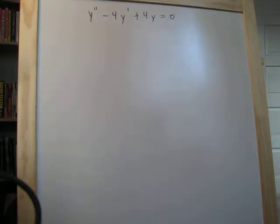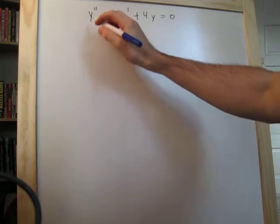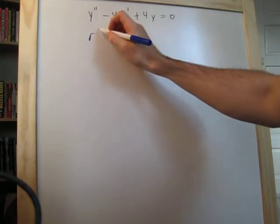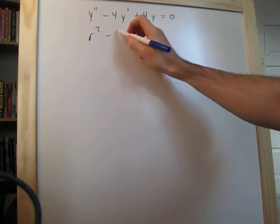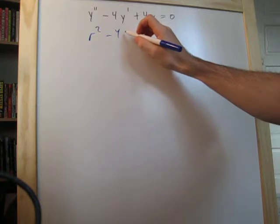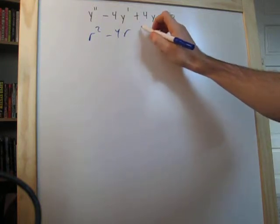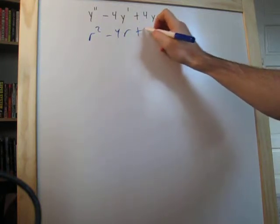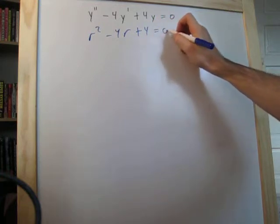I'm going to show you how to solve this second-order linear homogeneous differential equation using the characteristic equation method. This will drop down to become an r squared. This will drop down to become a 4r. The 4y will drop down to become a 4. We'll set this equal to 0.